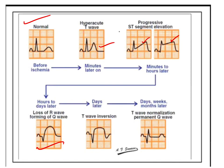Whenever Q wave formation is seen, we should think that ischemia has been occurring for the last 8 to 12 hours. After Q wave formation, R waves are progressively lost. Then after days, weeks, or months, we get the normal QRS complex pattern with persistent Q waves.